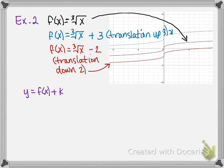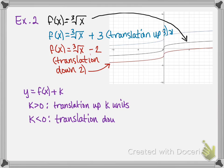In general, if we have a transformation of the form y equals f of x plus k: if k is greater than 0, then we have a translation up k units; and if k is less than 0, we have a translation down absolute value of k units.